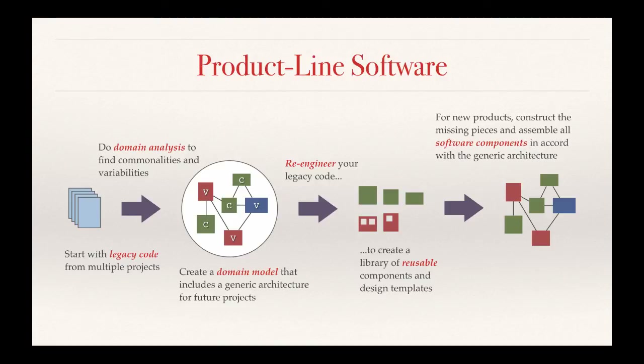Let's assume you have some legacy software already developed — say you start with at least three complete systems that are similar to each other. The first thing you do is analyze those systems and find the commonalities and variabilities between them. This process is called domain analysis, and you'll often hear people using the terms domain engineering and product line engineering interchangeably. Once you've analyzed your legacy systems, you come up with a generic architecture for future systems.